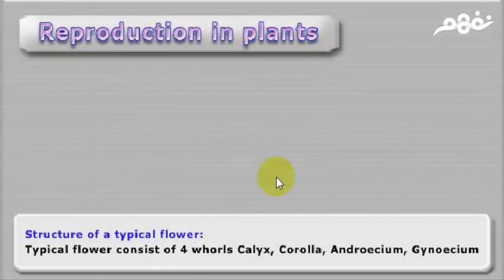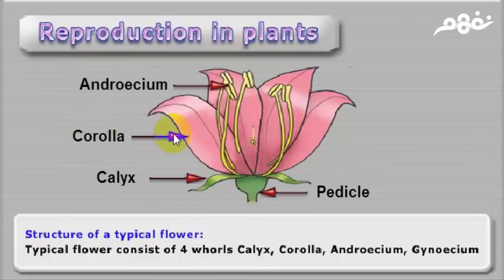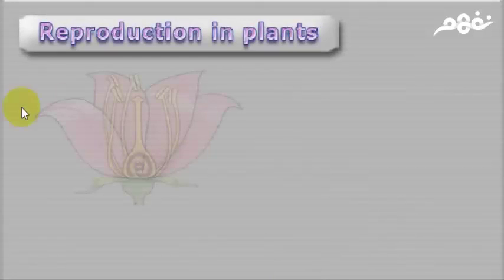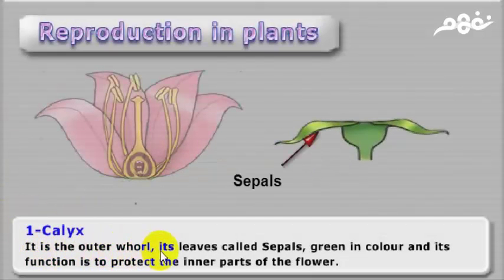Reproduction in plants. Structure of a typical flower. A typical flower consists of four whorls: Calyx, Corolla, Androecium, and Gynoecium. Number one is Calyx. It is the outermost whorl. Its leaves are called sepals, green in color, and its function is to protect the inner part of the flower.